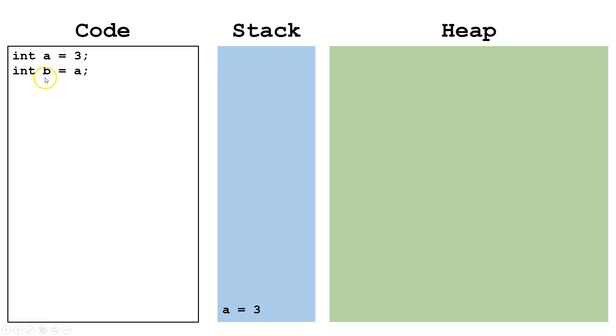Next, we declare a variable b of type int and set it equal to a. Since they are primitive types, we simply copy the data from a to b and b gets its own unique entry on the stack.